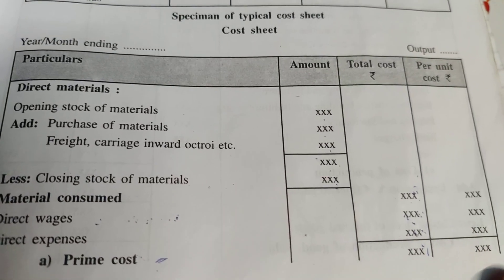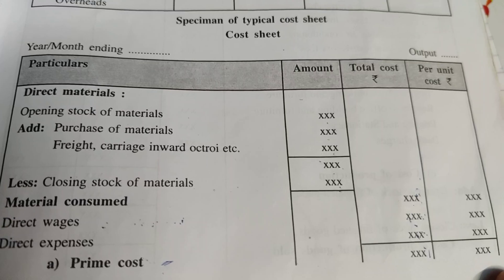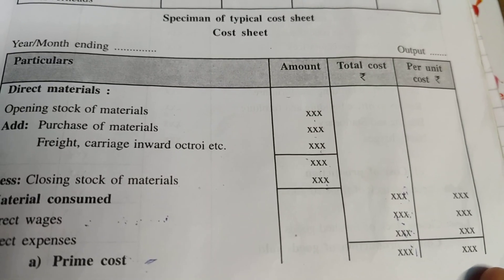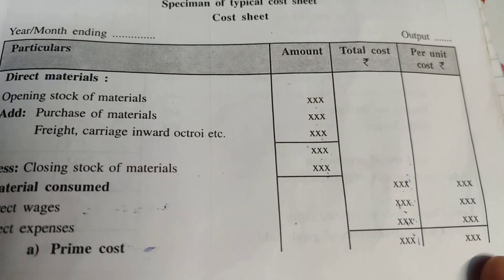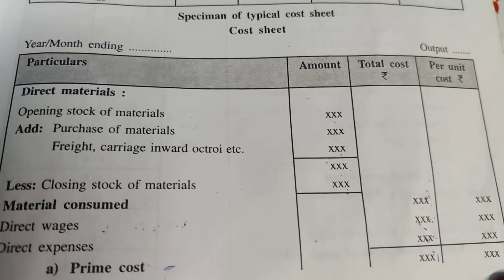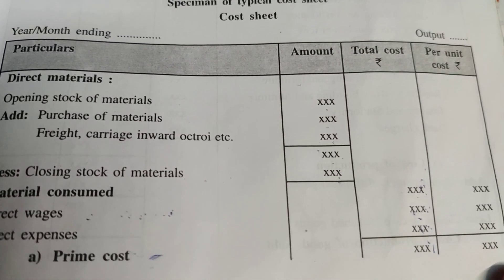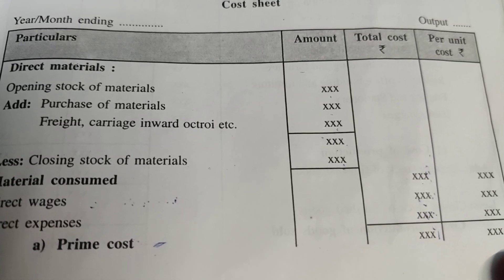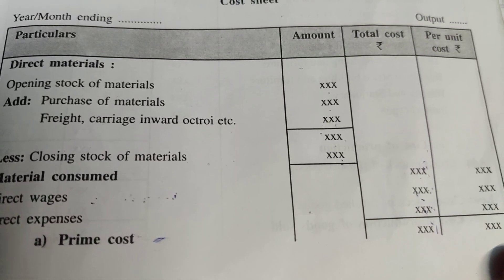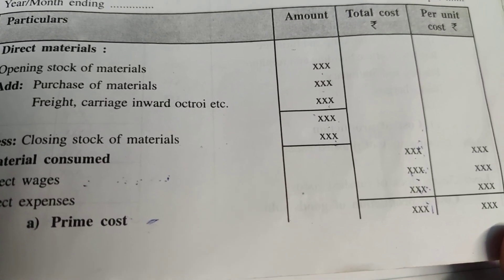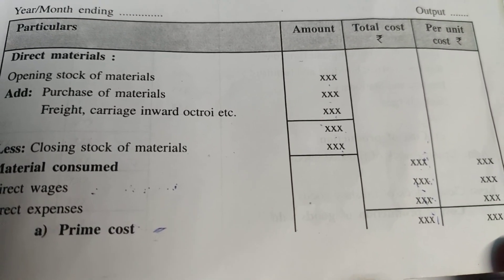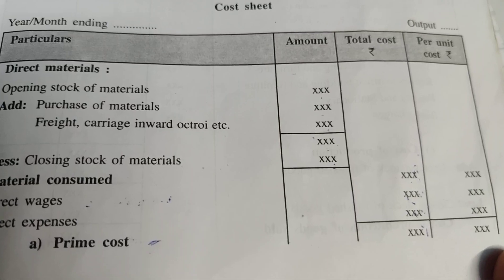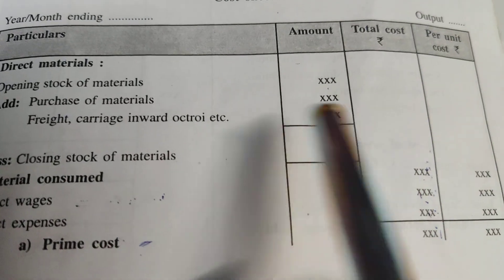Hello students. In my previous video I explained about a simple cost sheet, which can be prepared on the basis of element-wise classification of cost. Today I am explaining about a typical cost sheet — also called a comprehensive or detailed cost sheet — covering all expenses incurred in producing a product, selling it, and the indirect expenses in the office premises. Here is the detailed cost sheet of a company.